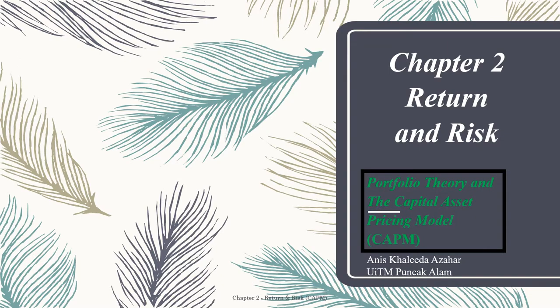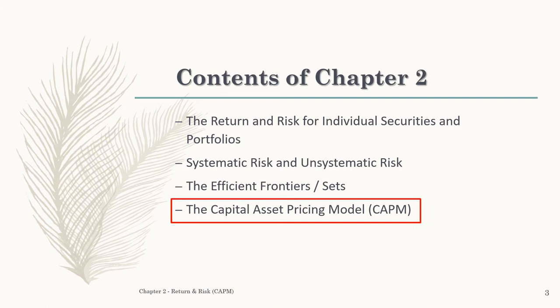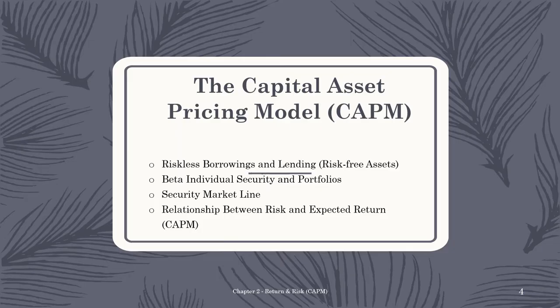Assalamualaikum and hi everyone. Now let's finish our last topic which is the Capital Asset Pricing Model, the last sub-topic in chapter two. In this chapter you have to learn: riskless borrowing and lending, beta for individual security and portfolios, security market line, and the relationship between risk and expected return. We will do a lot of exercises so you can learn how to calculate everything in this chapter.